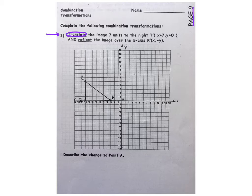Translate, which of course is the slide, translate the image 7 units to the right, so our X will experience the change, and reflect, which is your flip, the image over the X axis. Well, when we flip it over the X axis, which happens to be this axis right here, our Y will be experiencing the change.